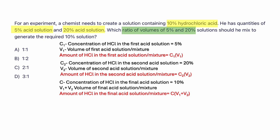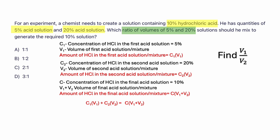What is it that we need to find? The ratio of volumes of 5% and 20% solutions — so we need to find V1 over V2. We need an equation to solve for V1 and V2. If we add the amount of HCl in the first acid solution to the amount in the second acid solution, we get the final amount in the final acid solution. So we can write the equation as: C1·V1 + C2·V2 = C·(V1 + V2).